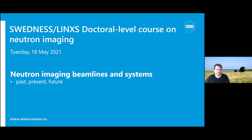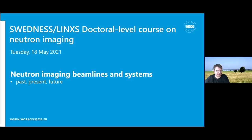I'd like to show you what you need to have to operate a neutron imaging beamline and what kind of systems are needed. Neutron imaging dates quite some time back, as you've already seen. A lot of things have happened and will happen in the future. Neutron imaging at spallation sources is very recent, and there are now two — maybe three — dedicated imaging beamlines at spallation sources: ISIS in the UK and J-PARC in Japan.